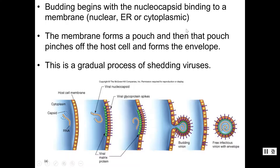Most of the time we think about budding at the outside cell membrane, and that's true for many different types of viruses. But some viruses will actually use the nuclear membrane to acquire an envelope, or the endoplasmic reticulum membrane to acquire an envelope. Either way, they form a pouch, encapsulate the nucleocapsid, and then it is shed outside of the cell membrane.